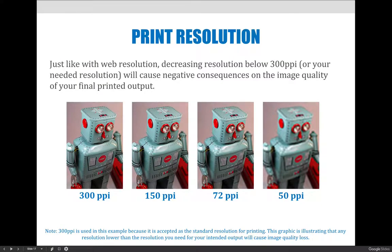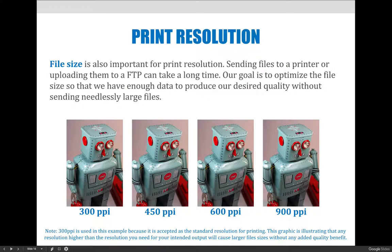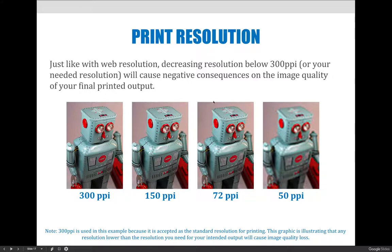The same thing happens with print resolution as with web: if you go below the ideal resolution for your output device you'll have noticeable image quality loss. On screen, the default of 300 PPI looks correct, and anything below that starts to show noticeable quality loss. This range varies for each output method — grayscale images may be fine at around 200 resolution, but anything below 200 will show noticeable quality loss, so keep that in mind.